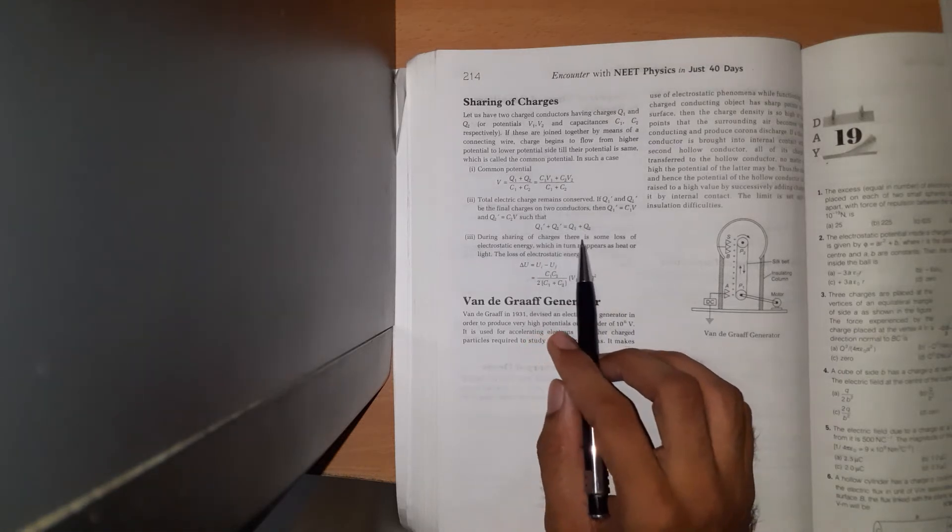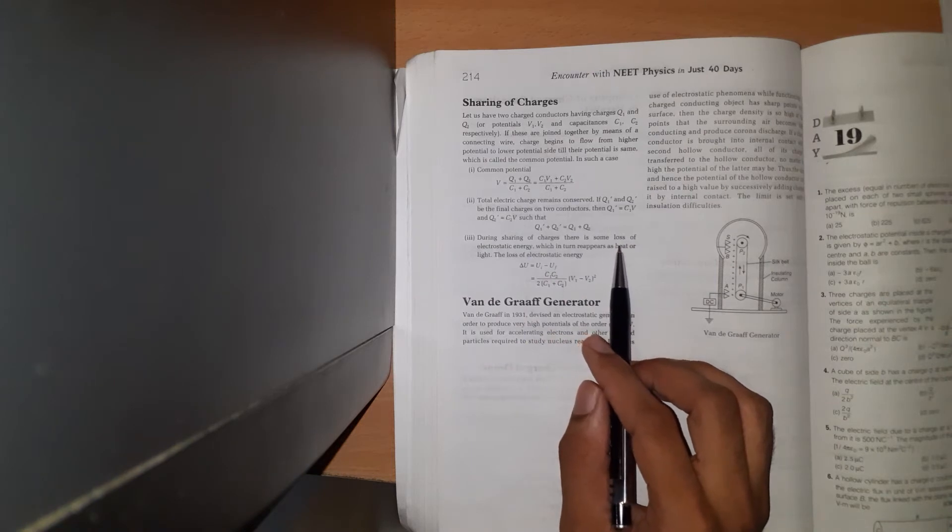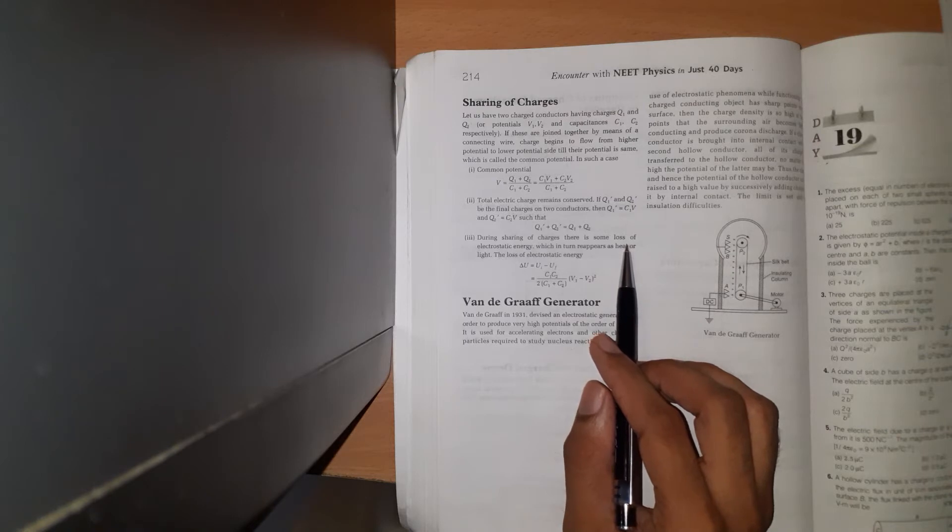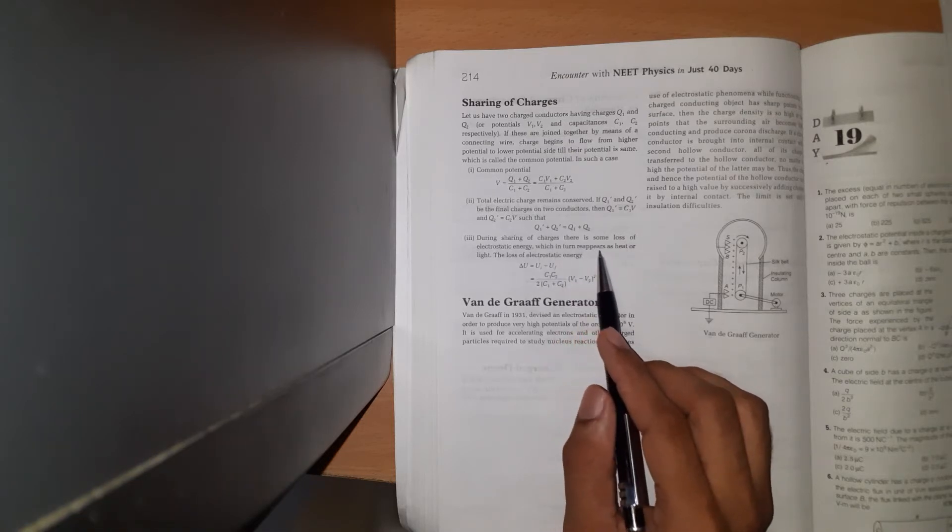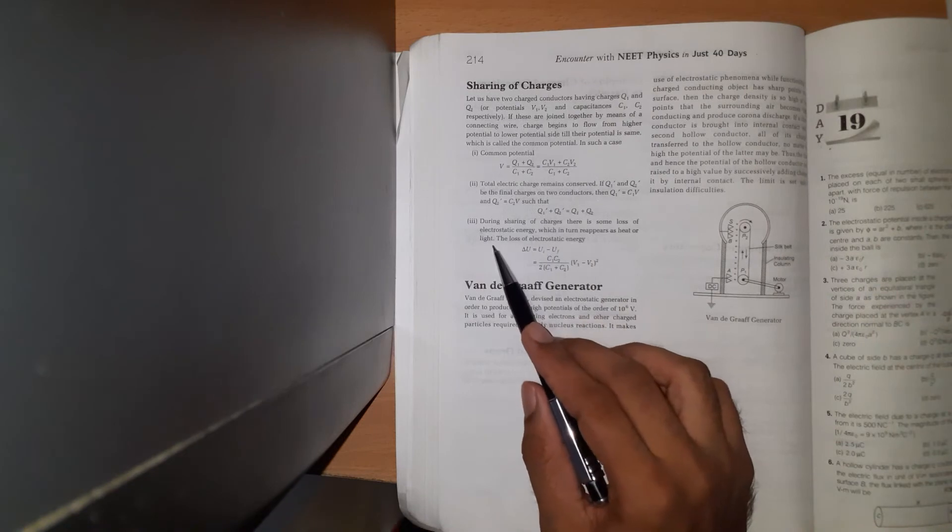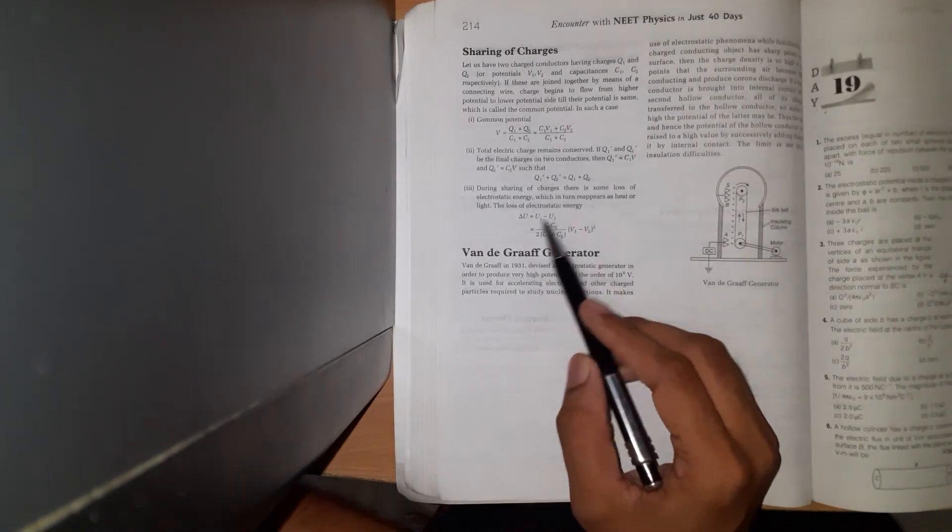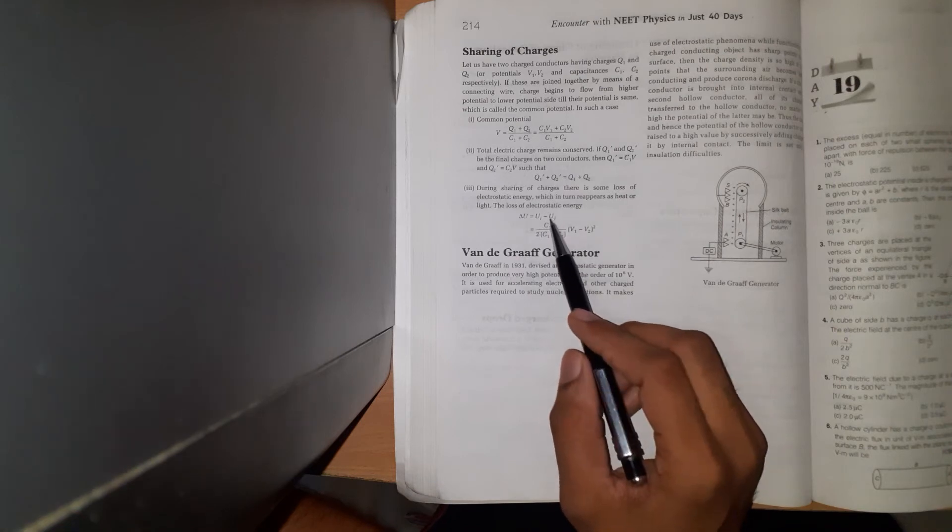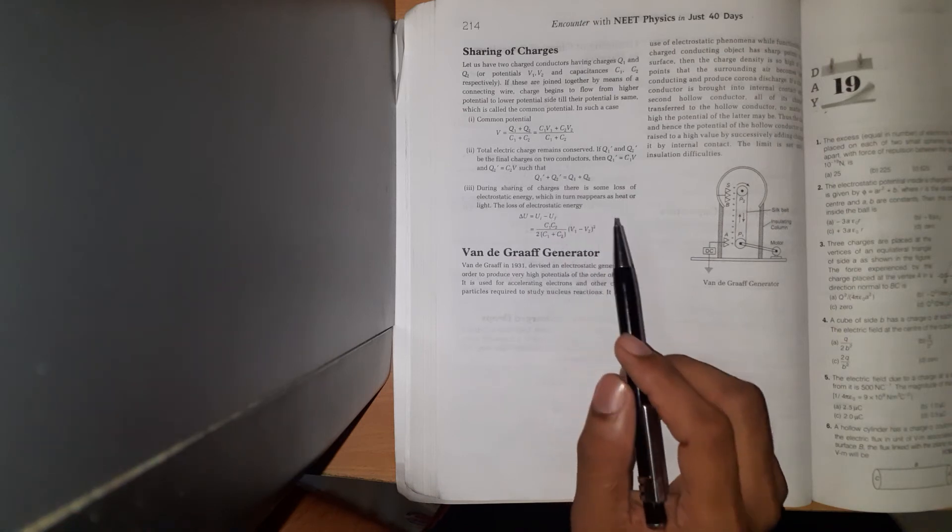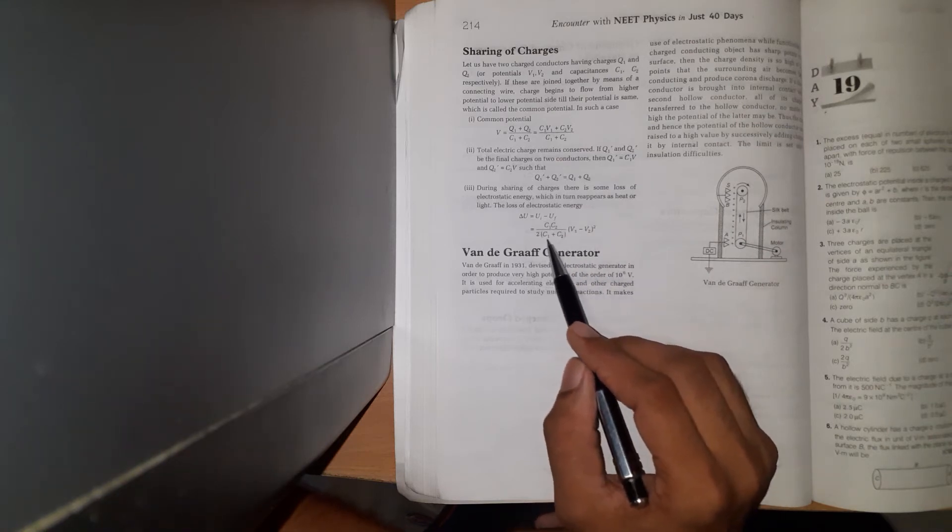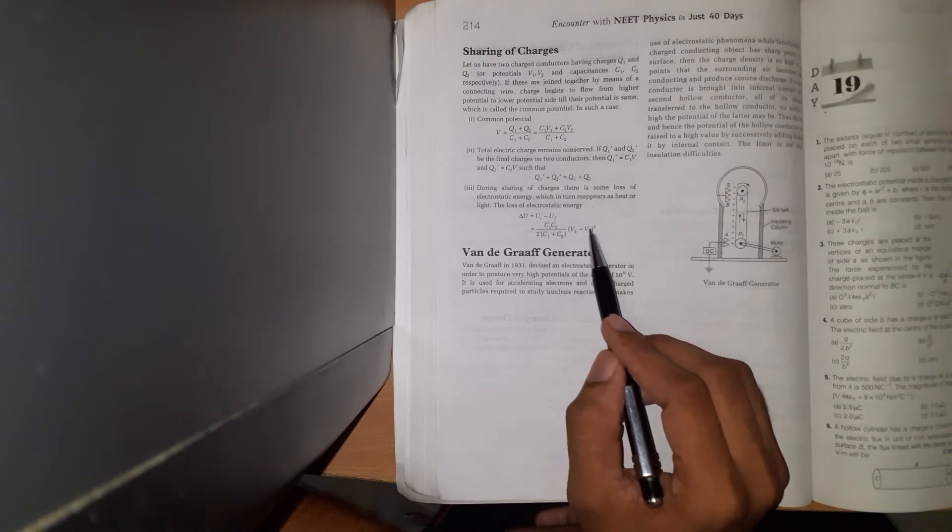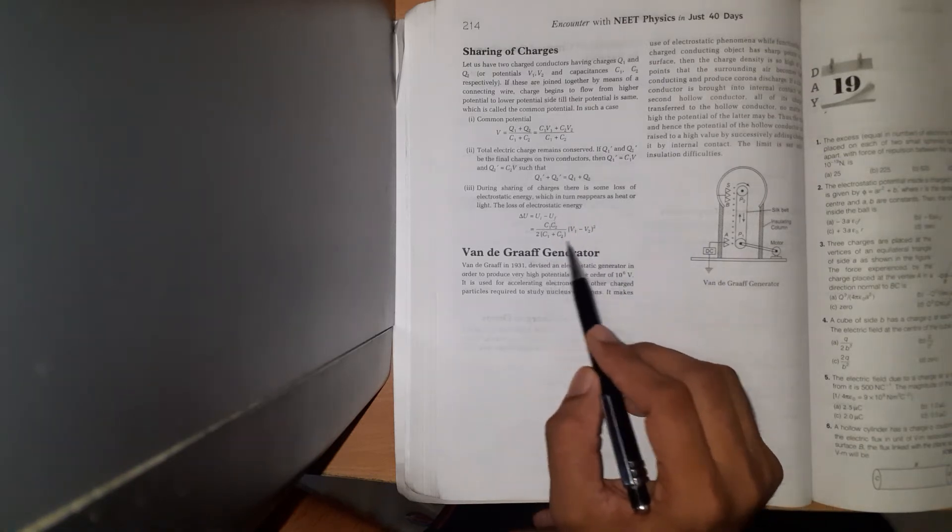During charge sharing, there is some loss of electrostatic energy in the form of heat energy or light energy. The loss of electrostatic energy, delta U, equals initial energy minus final energy: C1 times C2 upon 2 times C1 plus C2, times V1 minus V2 squared. This is the energy loss equation.